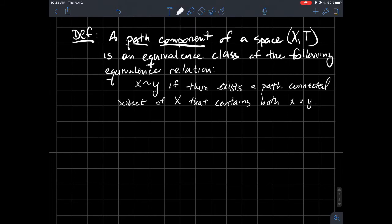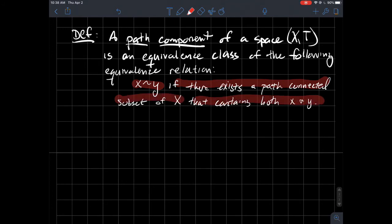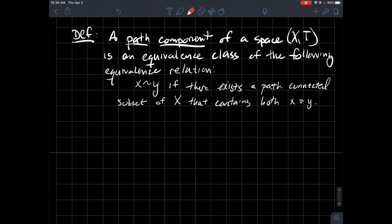So a path component is an equivalence class of the following equivalence relation. So the equivalence relation is x is equivalent to y if there exists a path-connected subset of X that just contains both of those points x and y. So two points are equivalent to each other if there's some path-connected subset that contains them both.